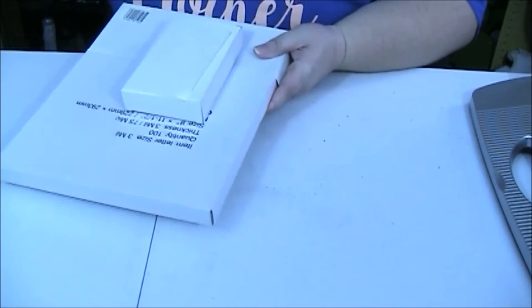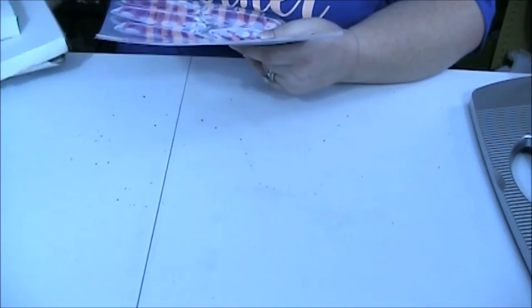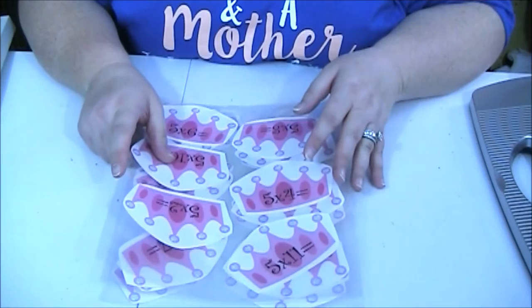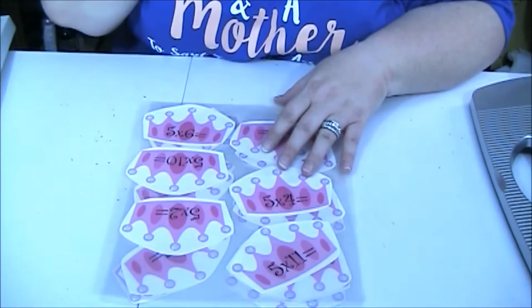When I decided to start homeschooling I was really nervous about how I was going to pay for it and one of the things I found was that there was a lot of free resources out there but you had to kind of compile them yourself. So one of the things I found was laminating and comb binding. That way I could make my own projects and put my own workbooks together.